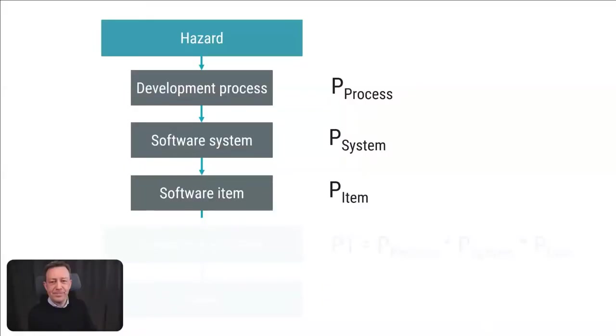That CPU power would then be a hardware requirement implementing a risk control measure on behalf of the software. This relates to architectural design, where you also find requirements about segregation necessary for risk control. Lastly, what actions can you take at the software item level?